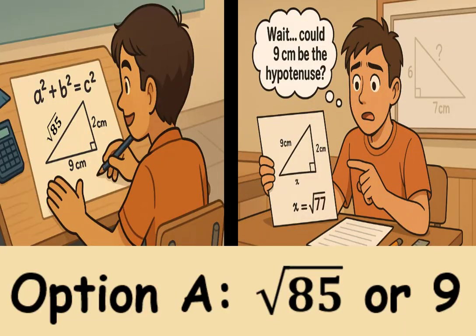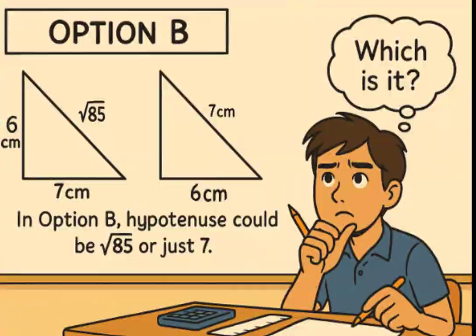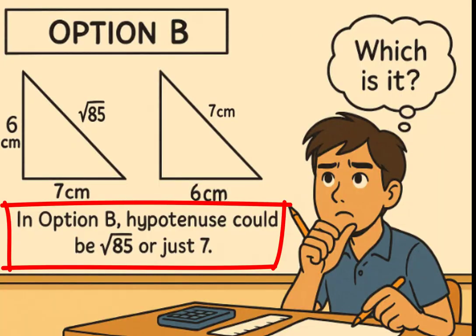To summarize, option A gives us either square root of 85 or just nine. Option B gives us either square root of 85 or seven.